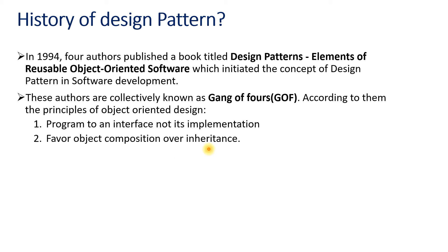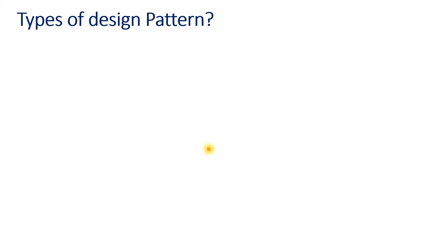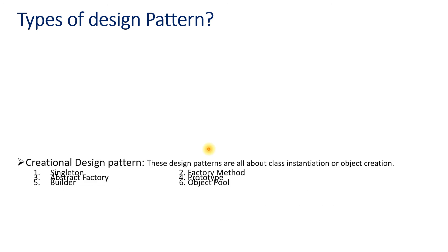Going to the types of design patterns, we have basically three types. The first one is the Creational design pattern. In this pattern we are mostly concentrated on how the classes are instantiated or how the objects are created. There are mostly six types of creational design patterns: the first one is the Singleton design pattern, the second is the Factory Method, and after that we have Abstract Factory, Prototype, Builder, and Object Pool.